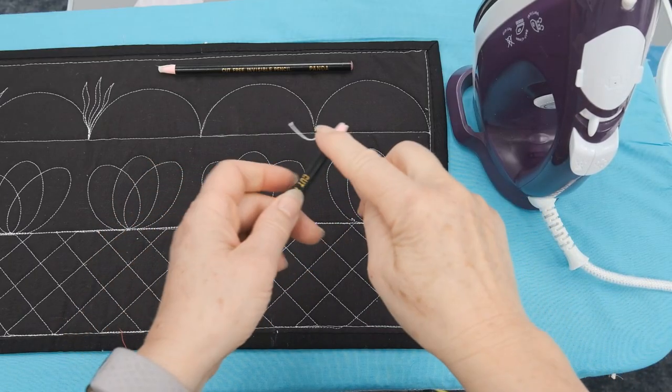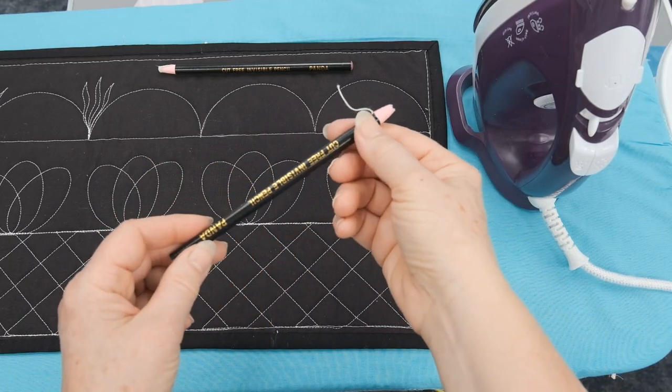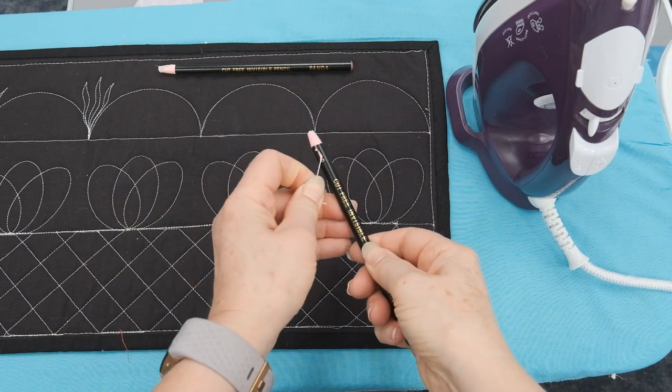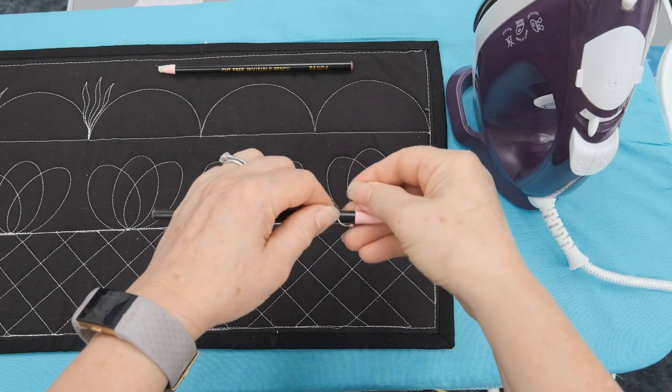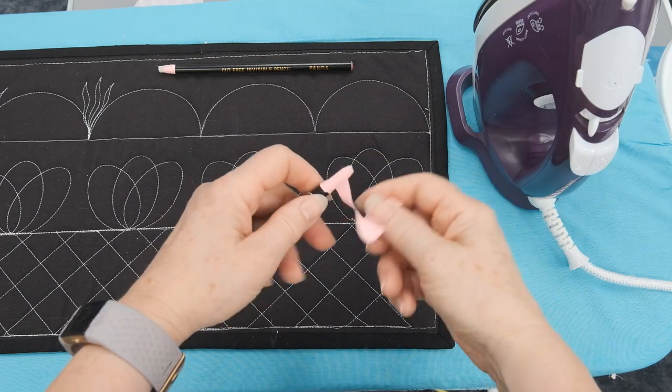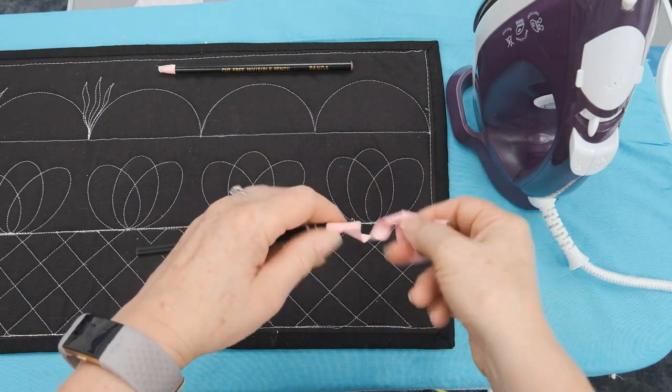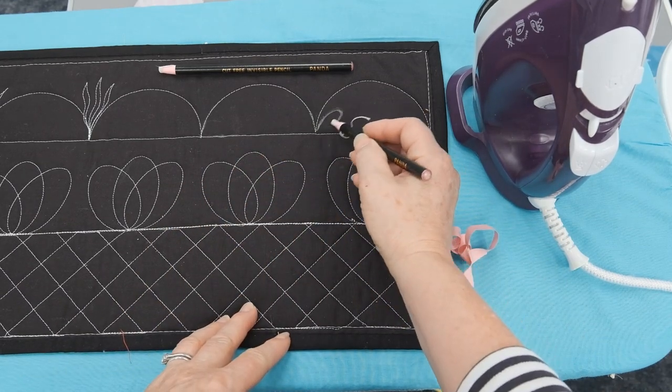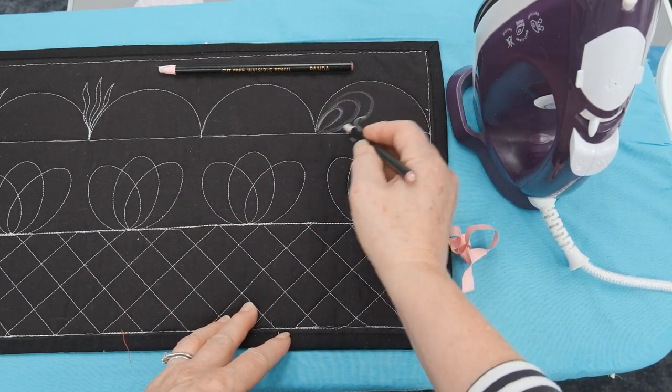When you've used up all the chalk on your Cut Free Invisible Pencil and you want to reveal the next section, you pull back on the tape and peel off the next section, which is this pink wrapper that goes around the core. There's your next section and you are all ready to mark up your quilt again.